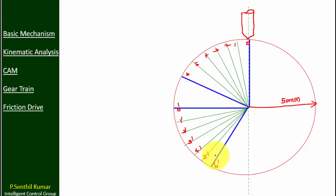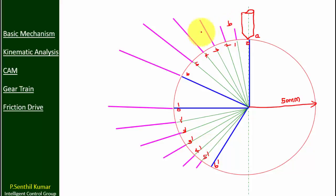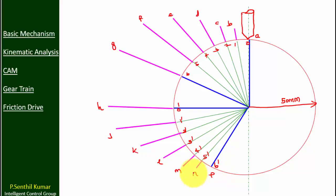Connect the above points with the center of the base circle. Copy the pink line from the displacement diagram to the CAM profile. Mark A, B, C, D, E up to P on the CAM profile. Connect A, B, C, D, E up to P freehand. This is the CAM profile for the knife edge follower.